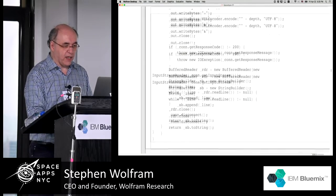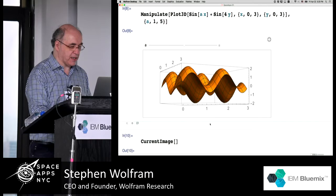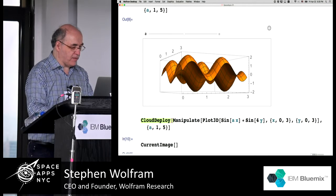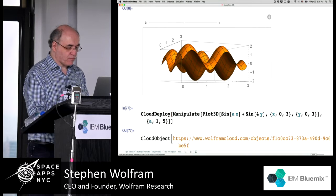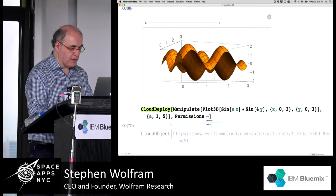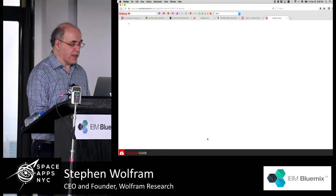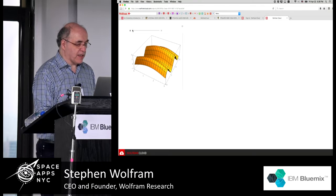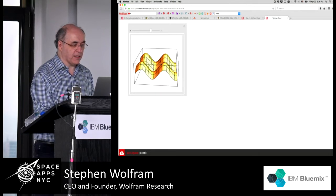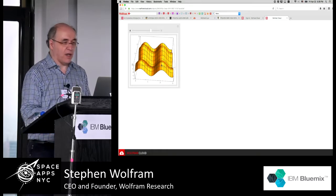I can also take this thing and instead of making it a form, I can make it into an API. Now this is a web API I just created. I could say '?animal=lion&depth=8' and when I run that API I'll get the result. If I wanted to, I could say give me embed code to embed that API in a Java program. This will generate the code I need to call that API in our cloud from a Java program — available for most common programming languages. I can also deploy interactive things: let's take this interactive Manipulate from line 8, CloudDeploy that with permissions set to public. It's deployed that interactive thing to the cloud, and you can embed this interactive thing in whatever website you want.